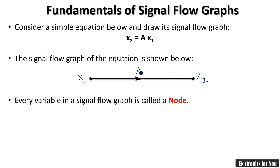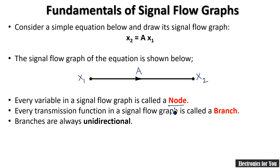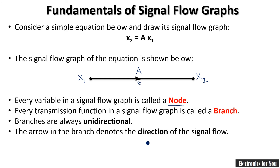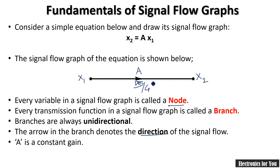The terms related to signal flow graph: first is node — variables x1 and x2 are your nodes. Next is branch — the transmission function connecting x1 and x2 is a branch; this branch is always unidirectional, indicated by an arrow showing the direction of signal flow from input to output. The last term is gain 'a', a constant which may be a number like 5, 4, 3, etc.